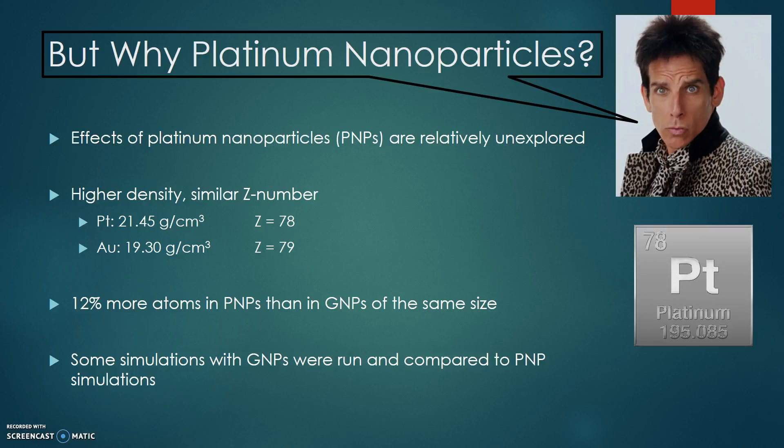So why were platinum nanoparticles chosen for this study? Gold nanoparticles are the gold standard in high-Z nanoparticle dose enhancement research, and there are relatively few articles on the other elements, namely platinum and bismuth. Platinum was chosen for its higher density yet relatively similar Z number. In addition, platinum nanoparticles contain about 12% more atoms than gold nanoparticles of the same size. One of the objectives of this study was to examine the potential effect that density of the atom may have on dose enhancement.